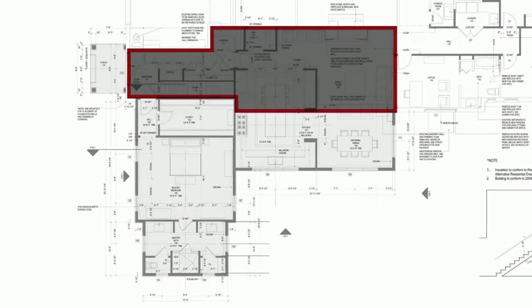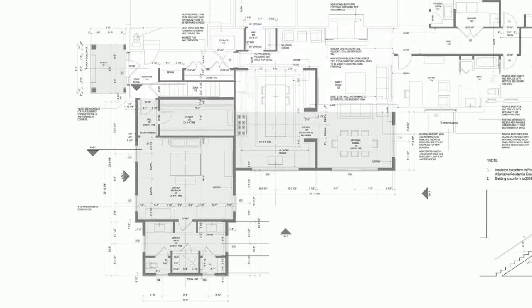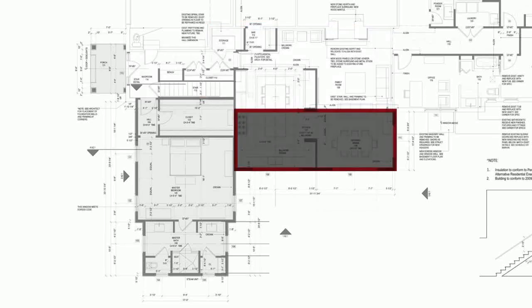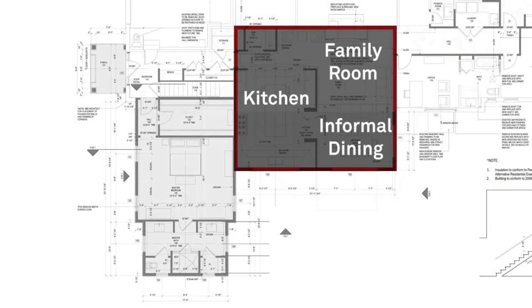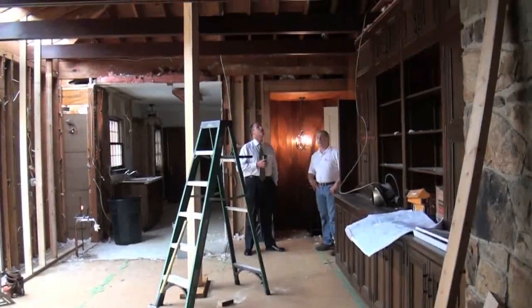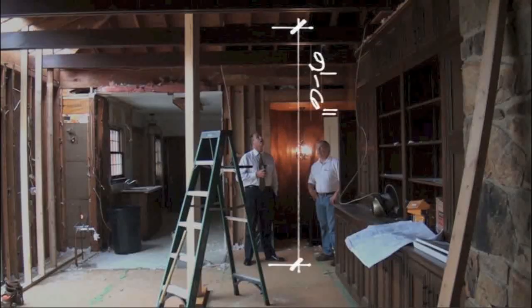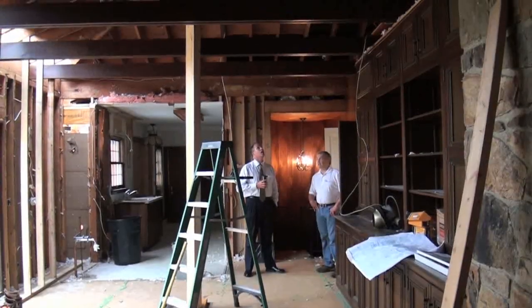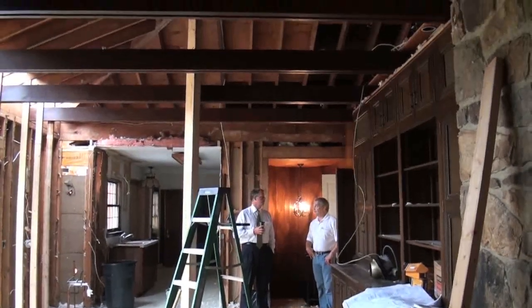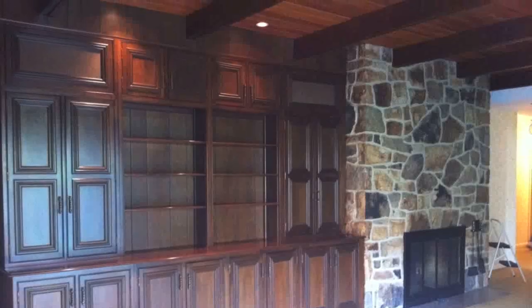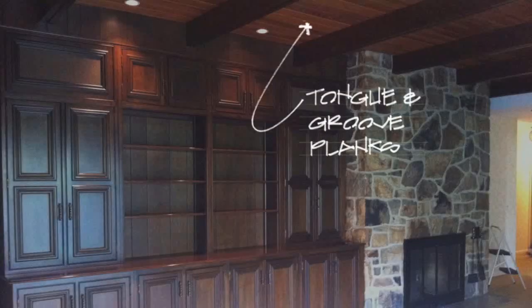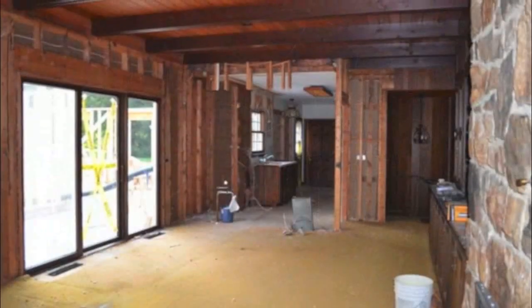We're renovating the existing kitchen and family room by adding an addition and altering the existing space. We planned on keeping the existing 9 foot 6 ceiling height in the family room by eliminating the existing false beams and tongue and groove planks.